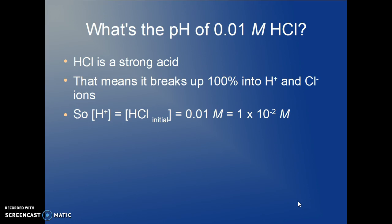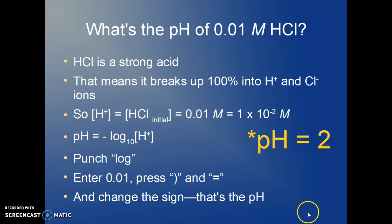That gives you a little bit of a clue of what the answer is going to be. But we can plug it into the calculator. We punch the negative log of the hydrogen ion concentration, 0.01. And we get a pH of 2.